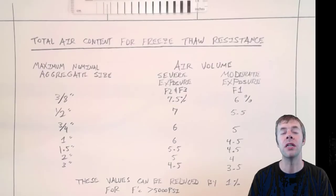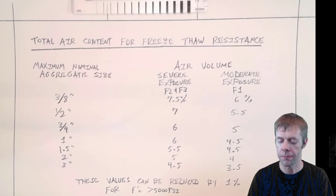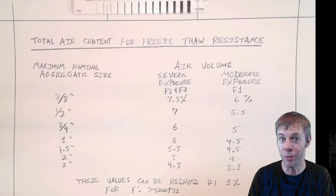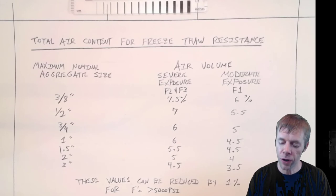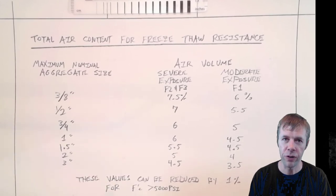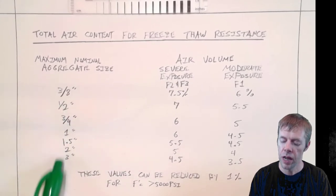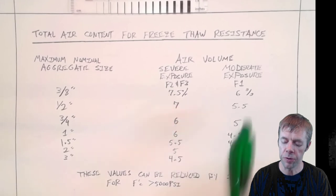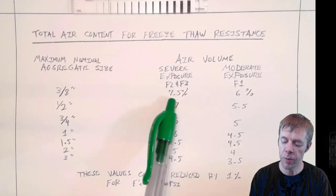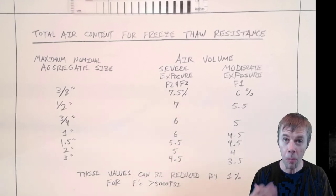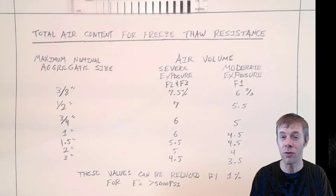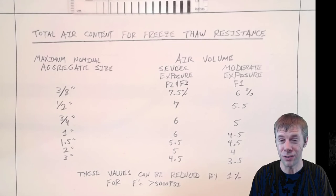Now we need to determine the volume of air inside the concrete. Now these notes might look familiar because you've seen them before. This is the total air content that's required for freeze-thaw resistance. And this is a table that talks about the maximum nominal aggregate size over here. And this tells you what kind of volume you need. This is for severe exposure or for moderate exposure. Most people just assume whatever exposure they're in is severe.